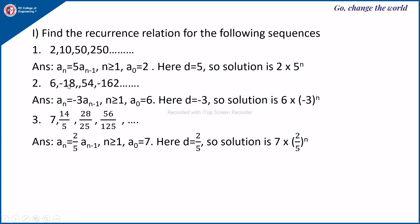Next, the sequence 6, -18, 54, -162, ... Observing: 6×(-3) = -18, -18×(-3) = 54. So the recurrence relation is a(n) = -3·a(n-1), n ≥ 1, with a(0) = 6. Therefore the solution is a(n) = 6·(-3)^n, for n ≥ 1.